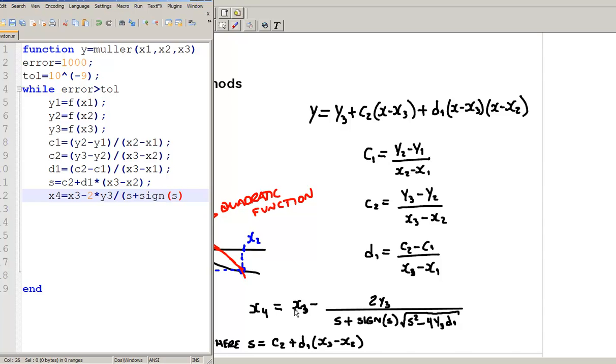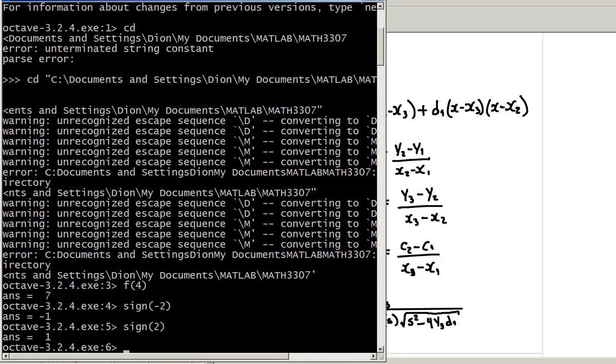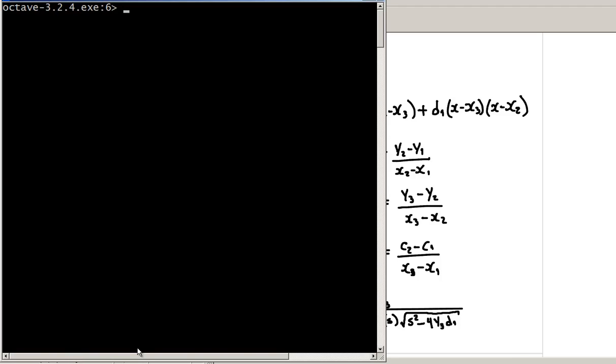Now, I guess I didn't mention anything about this function, signal. Signal is a function that outputs 0, 1, or negative 1, depending on the sign of the value. For example, if I type signal 5, the output is 1, meaning this is a positive number. If I say signal negative 3, it outputs negative 1, which means it's a negative number. And if I put signal 0, it outputs 0. So, there are only three possible values: 1 if the value is positive, negative 1 if the value is negative, 0 if the value is 0. That's part of the formula here.